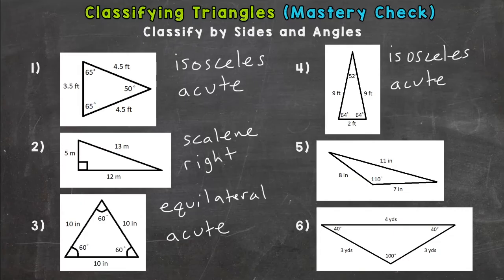Number five. It looks like none of the side lengths are congruent, so it would be scalene. And then we have an angle that is greater than 90, so obtuse.